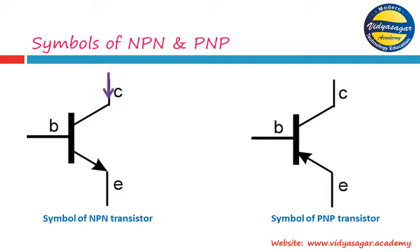The arrow direction is specific because in an NPN transistor connected in a circuit, the current direction is specific: in NPN, current enters from the collector terminal, current enters from the base, and current exits from the emitter. So the emitter current in NPN is the addition of collector current and base current.